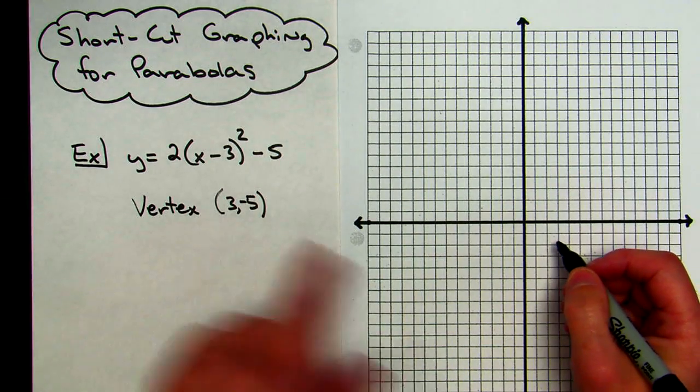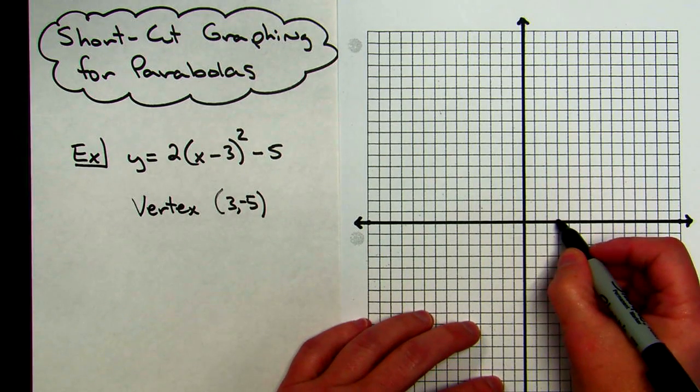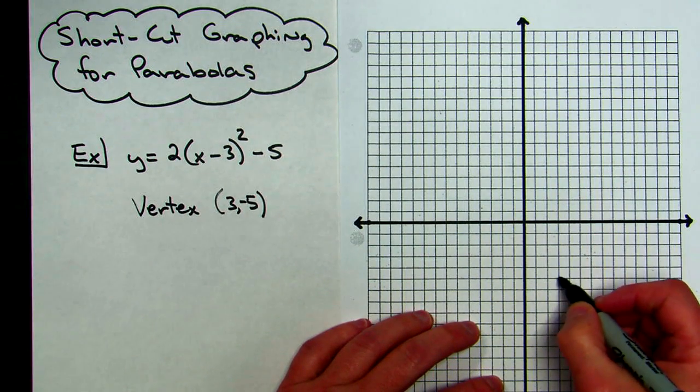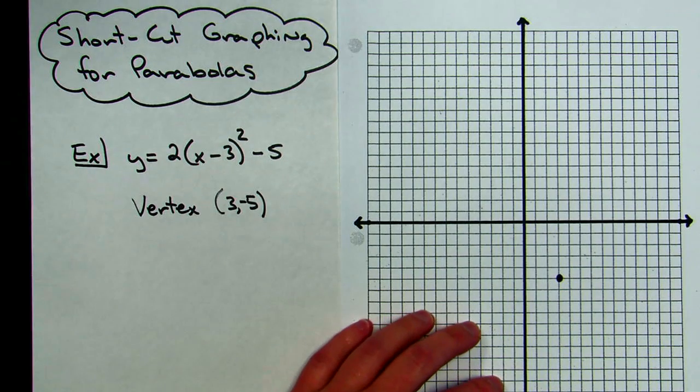I'm going to start by putting the vertex on, so to the right 3, down 5: 1, 2, 3, 4, 5. I know that is my vertex.